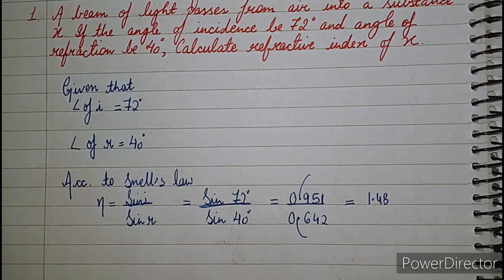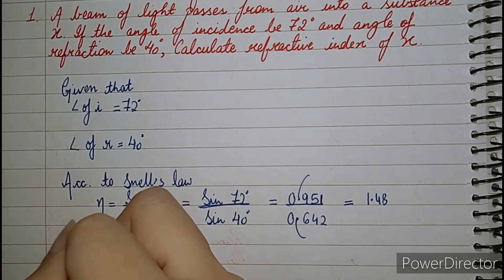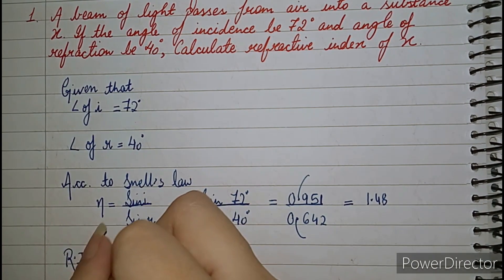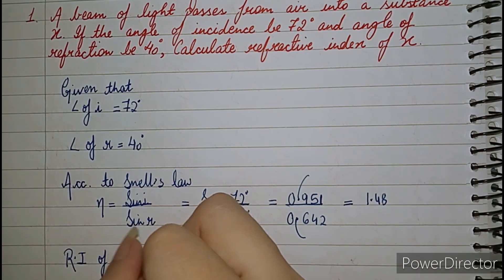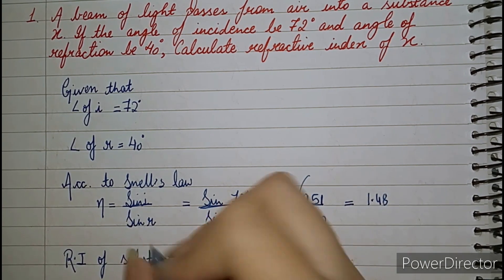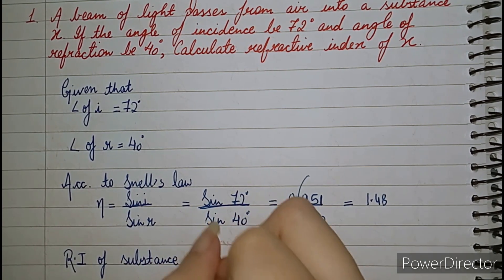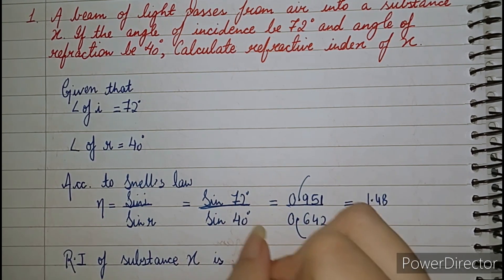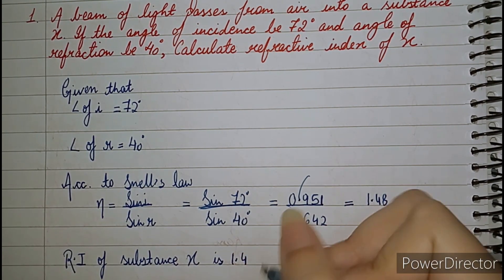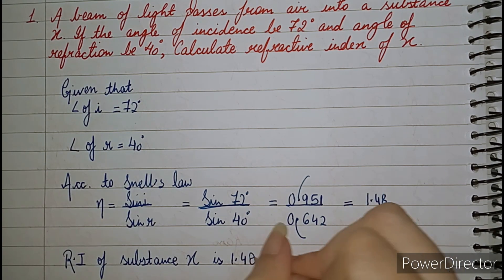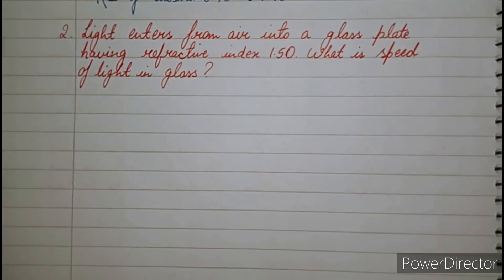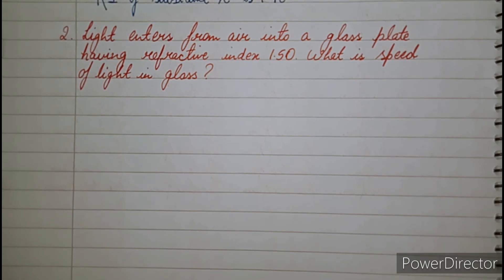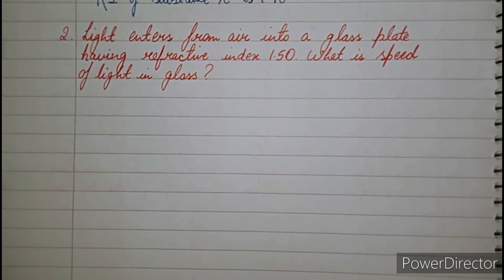So the refractive index of substance X is 1.48. You need to write it properly. So it's clear: the very first formula for calculating refractive index is sin I upon sin R.